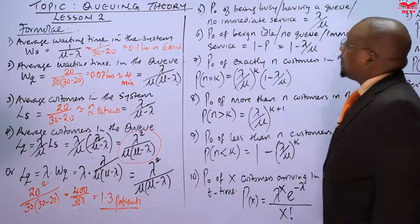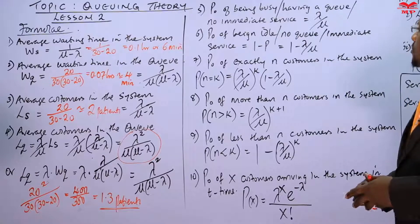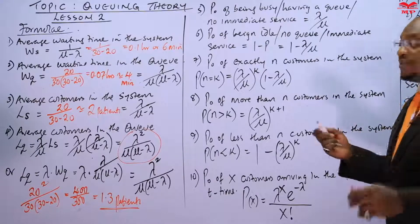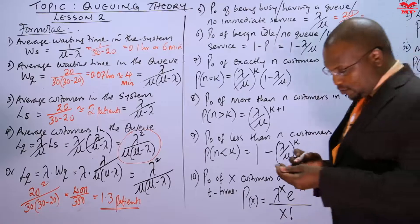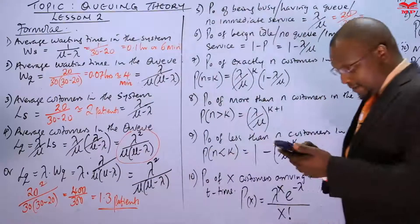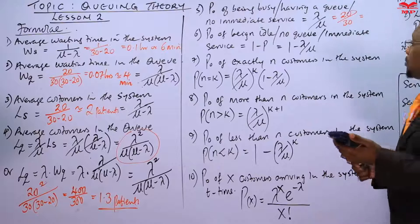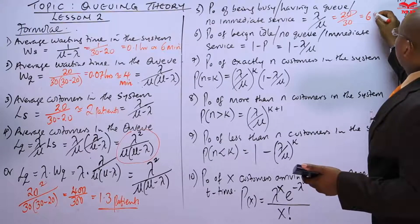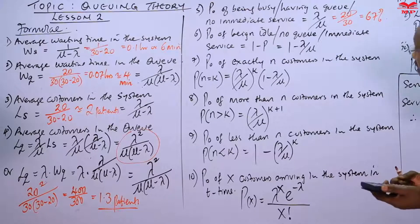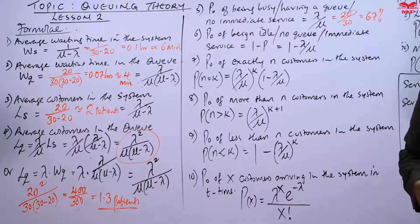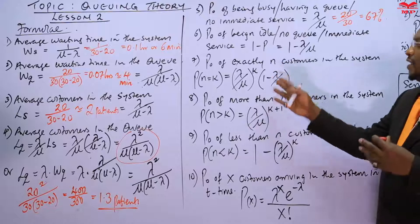The probability of being busy, or having a queue, or not receiving immediate service is the arrival divided by the service rate, which is 20 divided by 30. This is 2 over 3, which is 0.67, or 67% on average. So this doctor is busy 67% of her time, and therefore the remaining 33% of her time she is somehow idle and we would expect her to see other patients.